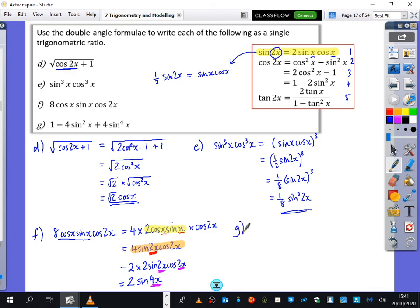Now in G, you need to recognize something special about this. 1 minus 4 sine squared x plus 4 sine to the power of 4x. One of my students was able to recognize that this is 1 minus 2 sine squared x all squared. Which is great because that's the same as rule number 4. So I can replace this 1 minus 2 sine squared x with cos 2x. So it is cos 2x all squared, which is cos squared 2x.